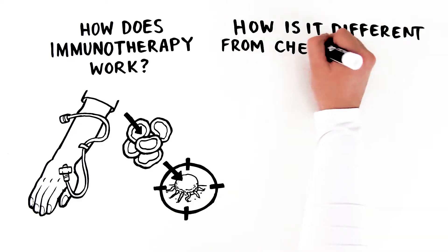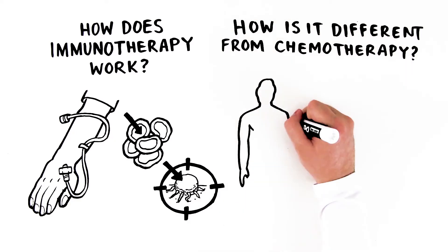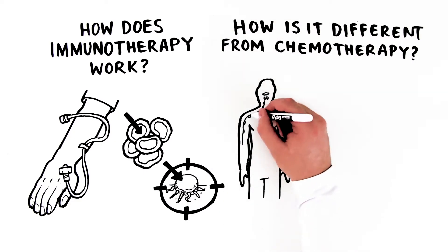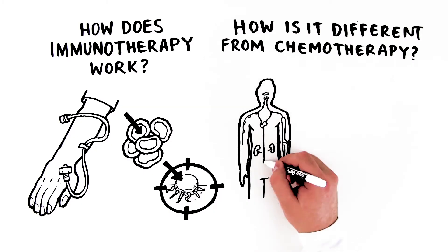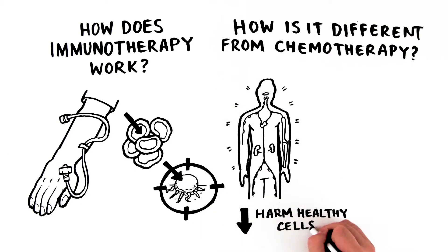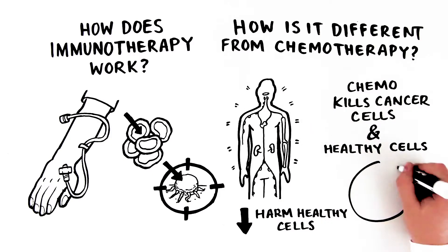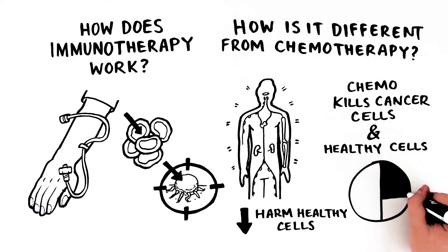How is it different from chemotherapy? Immunotherapy boosts or creates a stronger immune response that can kill cancer cells, but usually doesn't harm healthy cells. Chemotherapy kills cancer cells but also harms healthy cells, so the side effects can be very different.